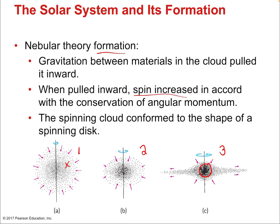When pulled inward, the spin increased. The story of solar system formation isn't just about a collapsing cloud, but also about a change in rotation. Initially there was just a cool gas cloud spread over space. As it collapsed inward under gravity, it spun up — started rotating faster. This is the principle of conservation of angular momentum: as the nebula became denser and smaller, it spun faster.